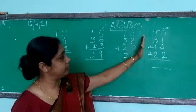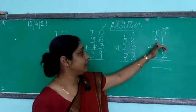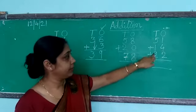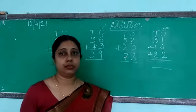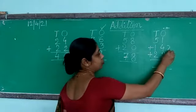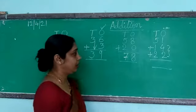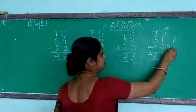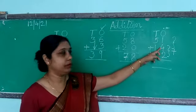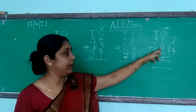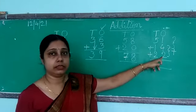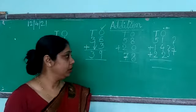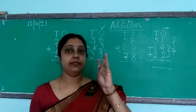Let us go to the next question. Here I have written 3 numbers: 51, then 14, then 22. You may add the first two numbers and then add the third, or you may add any two first and then add the remaining one. Let us start from the ones place. After 2 you count 4 more: 3, 4, 5, 6. So we get 6.